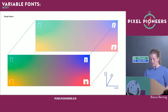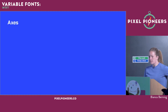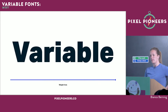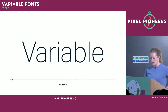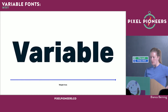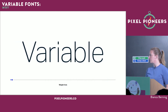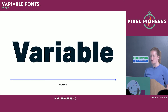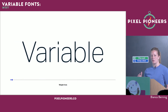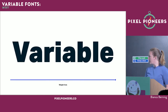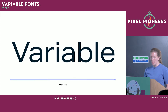Let's talk about the axes. There are five axes defined in the OpenType specification, which is where everything about font files is defined. For the variable font addition, they added five axes. The first and most well-known is the weight axis — you can access anything between hairline and black. The second most common is the width axis — narrow to expanded and everything in between.